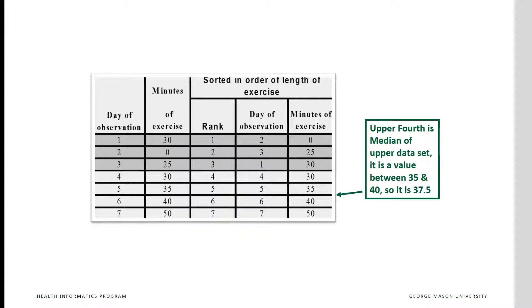To calculate the upper fourth, we calculate the halfway point for the upper half of the data. Again, because the median is an actual data point, we include this point in the upper data set. With the median, we have four data points from median to the highest value. The upper fourth is between fifth and sixth data points, between 35 and 40, and therefore its value is 37 and a half.